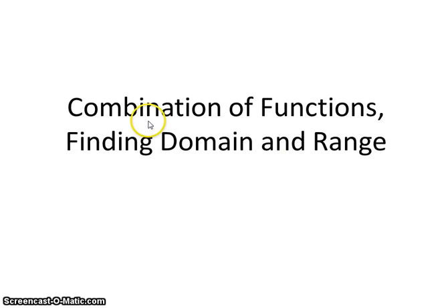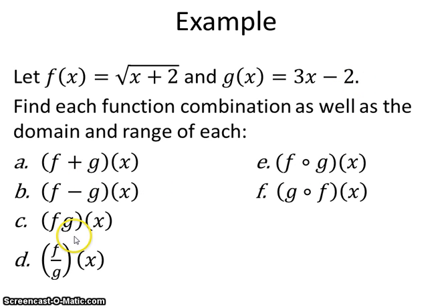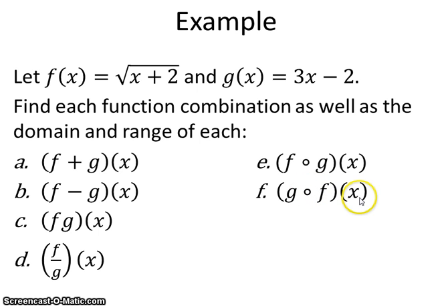Today we're going to look at combination of functions examples, covering all the different ways to combine our functions and find the domain and range for each combination. Our two functions are f equals the square root of x plus 2, and g equals 3x minus 2. We'll combine them by adding, subtracting, multiplying, dividing, and through function composition. Note that f composed with g of x and g composed with f of x are not the same, so we'll look at those separately.